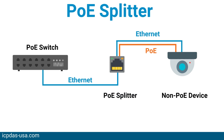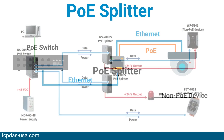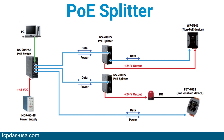Devices called PoE splitters are used with PoE switches and PoE injectors. They take the output of the Ethernet network and split it so that it can be delivered to Ethernet-enabled devices as two separate inputs. They supply power by separating the power from the data and feeding it to a different input that a non-PoE device can utilize.